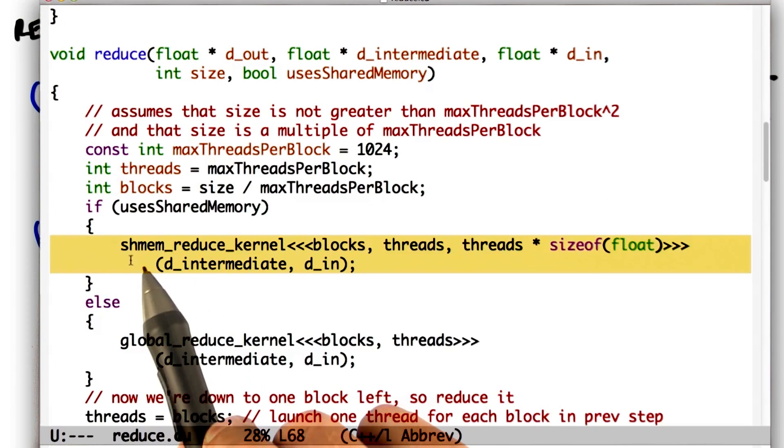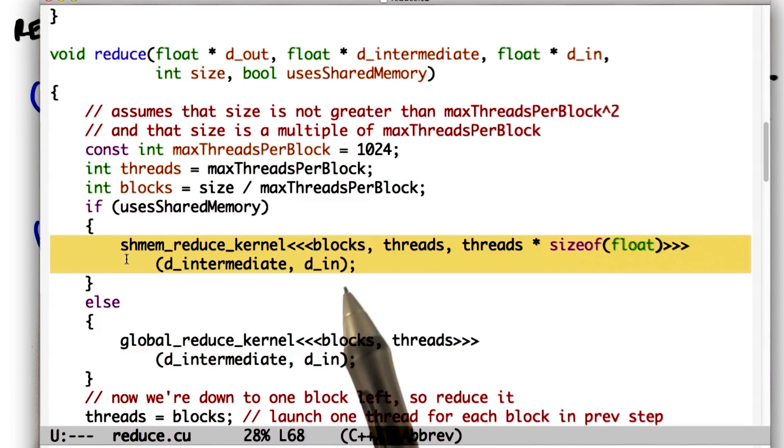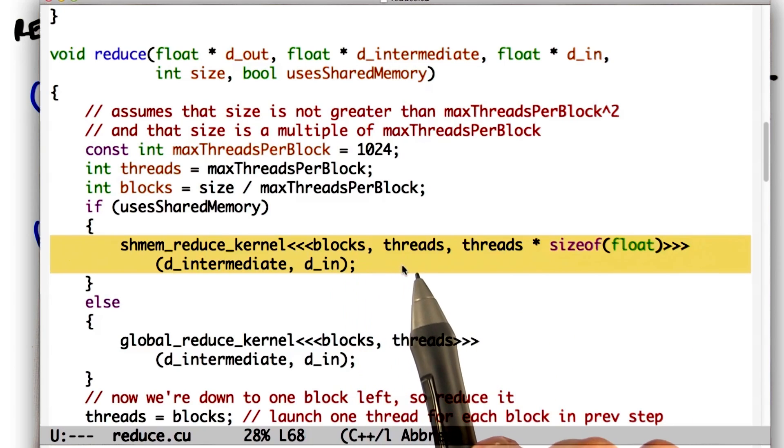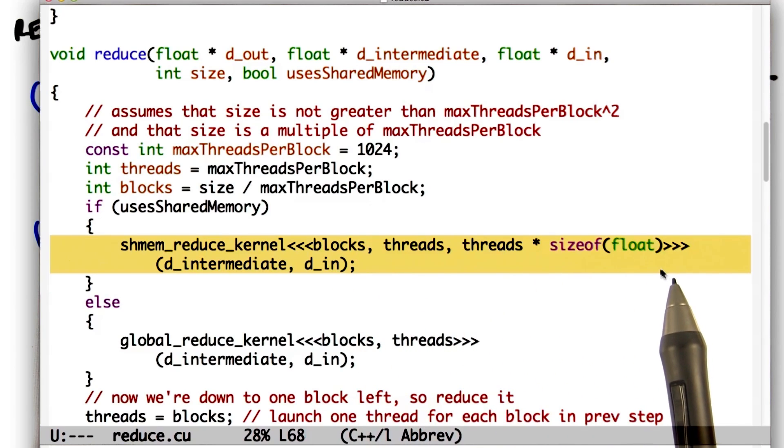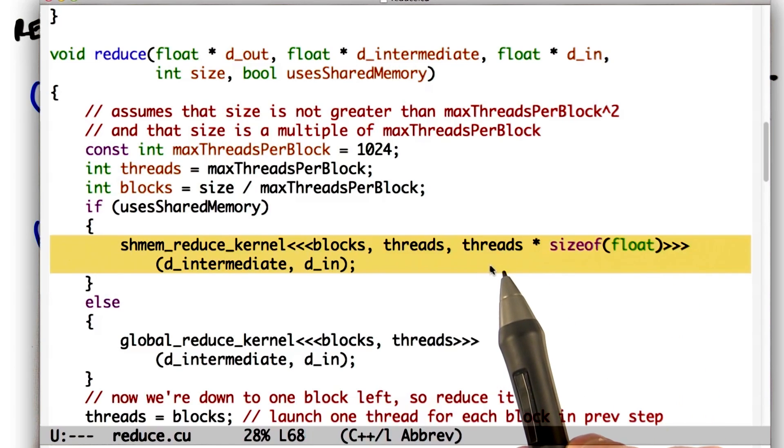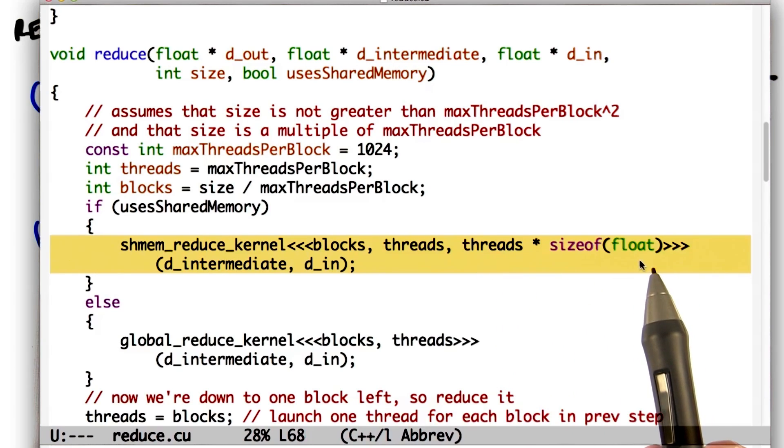When we're calling the reduced kernel using the shared memory, we call it with now three arguments inside the triple chevrons, the normal blocks and the threads, but then we say how many bytes we need allocated in shared memory. In this case, every thread is going to ask for one float stored in shared memory.